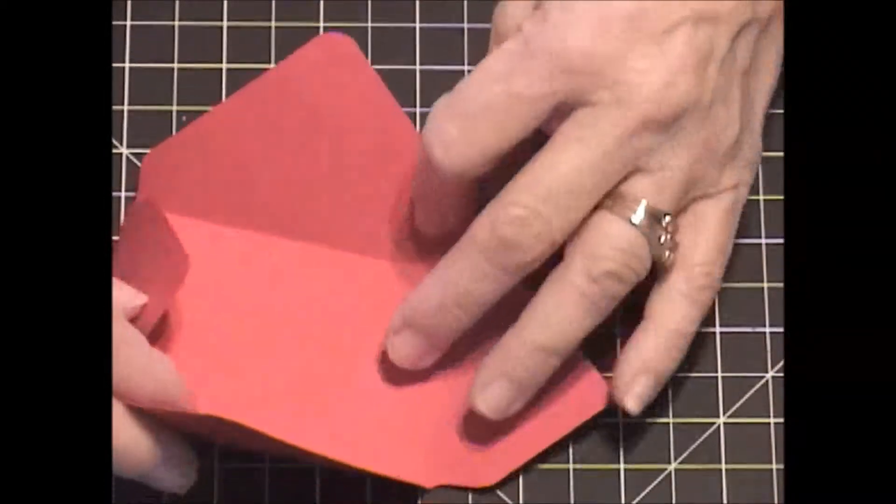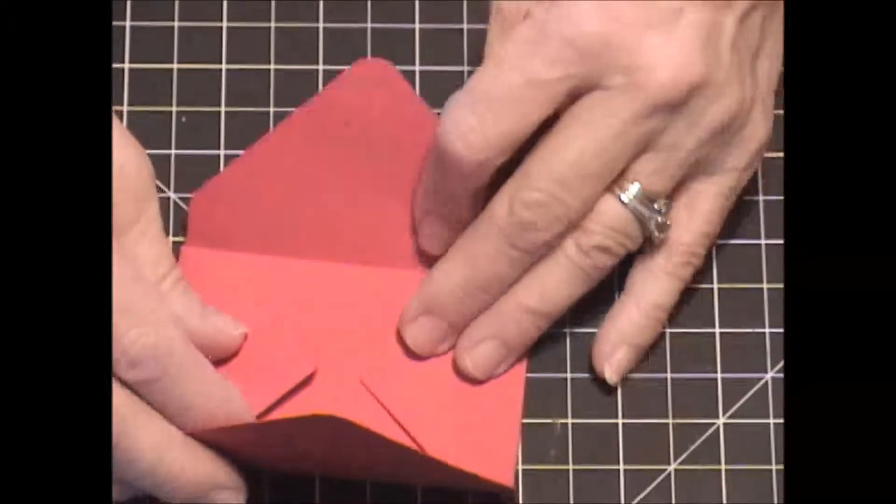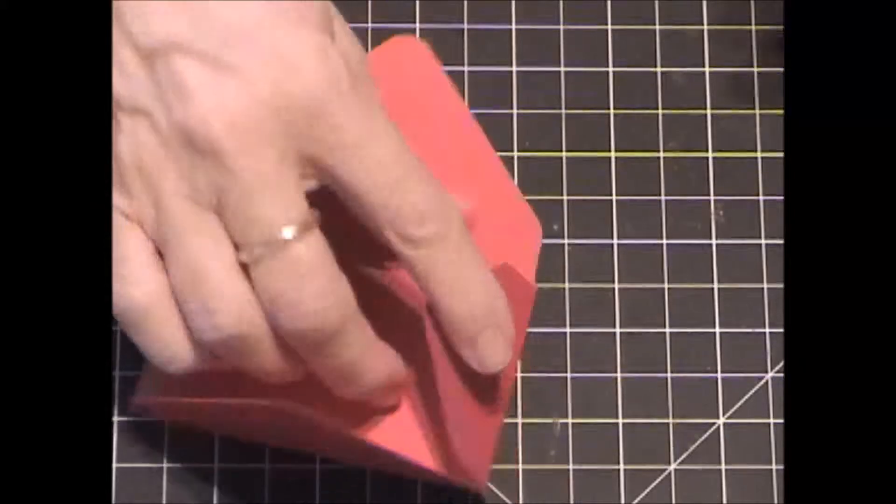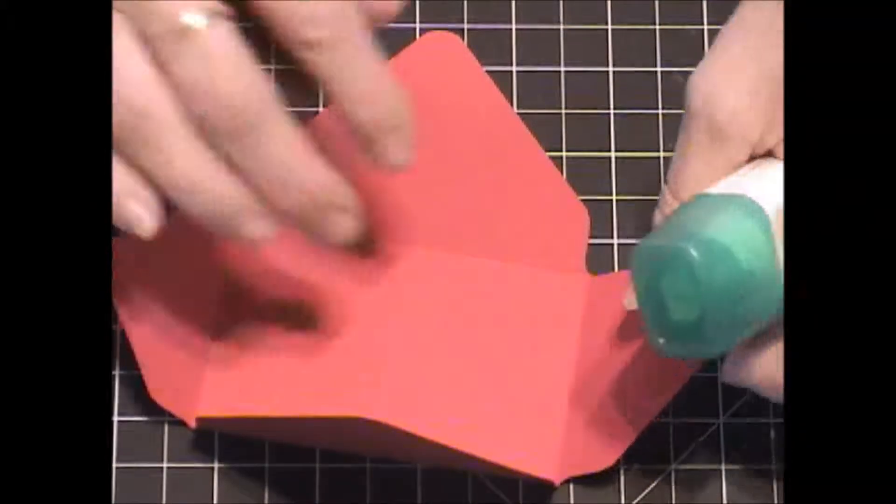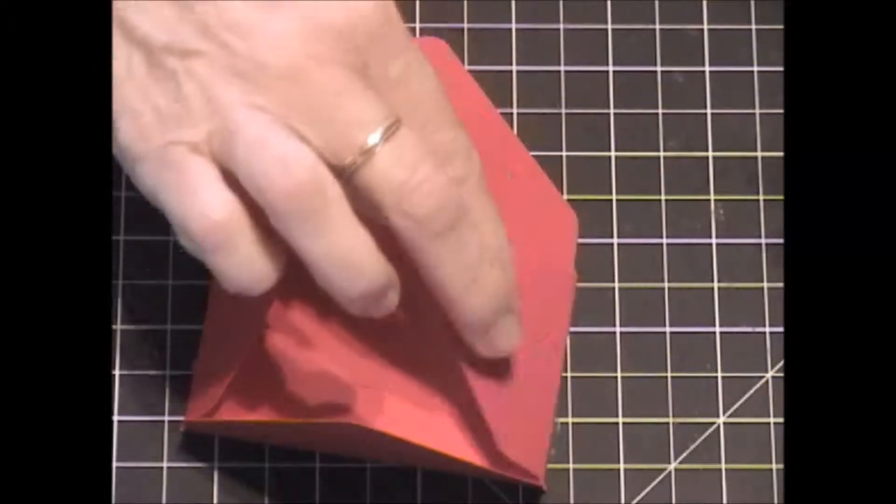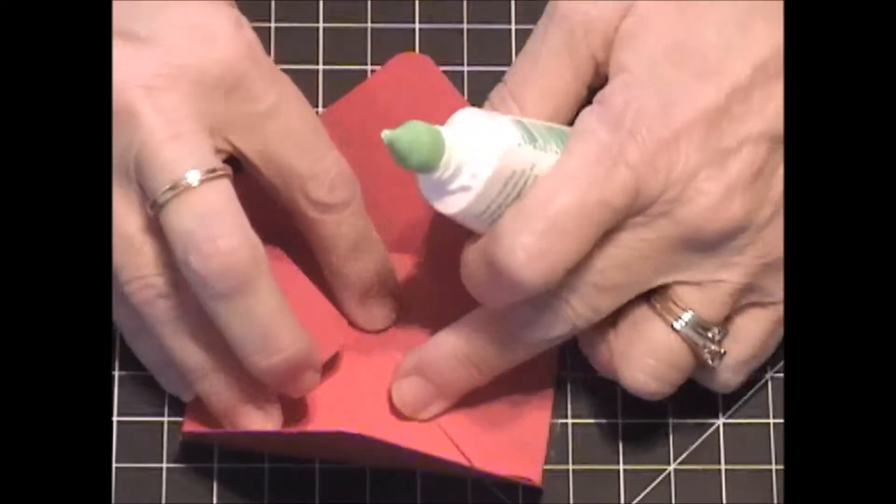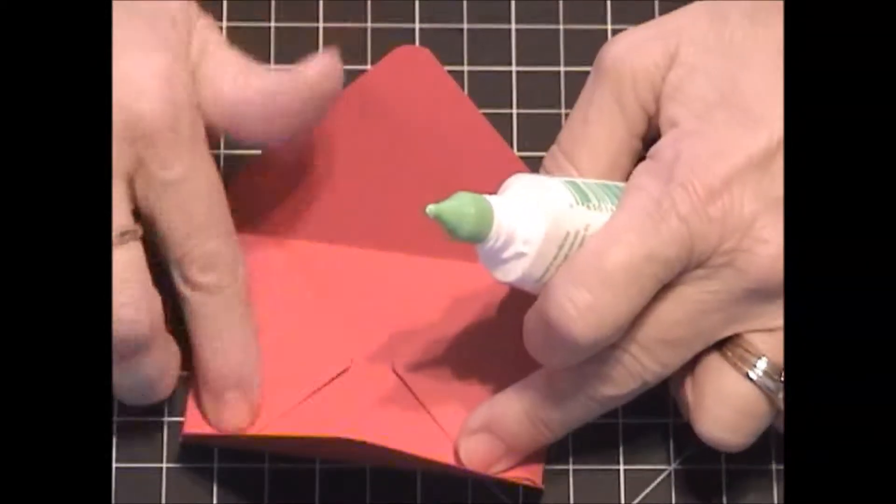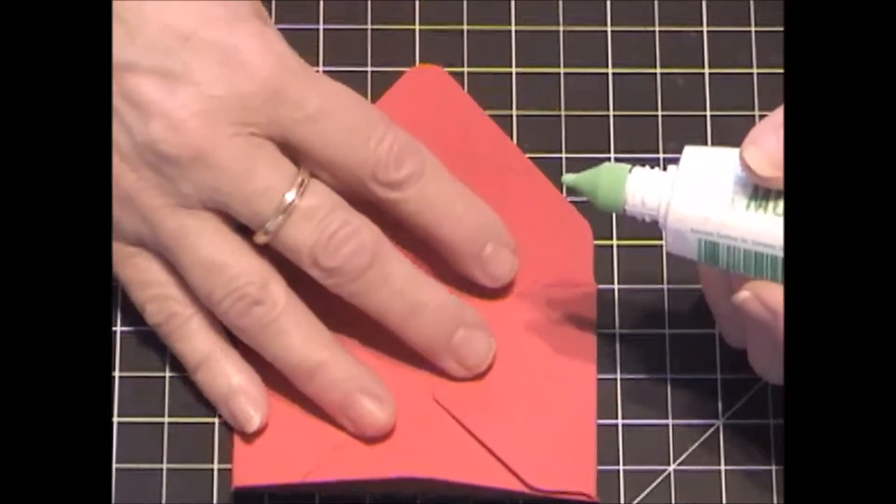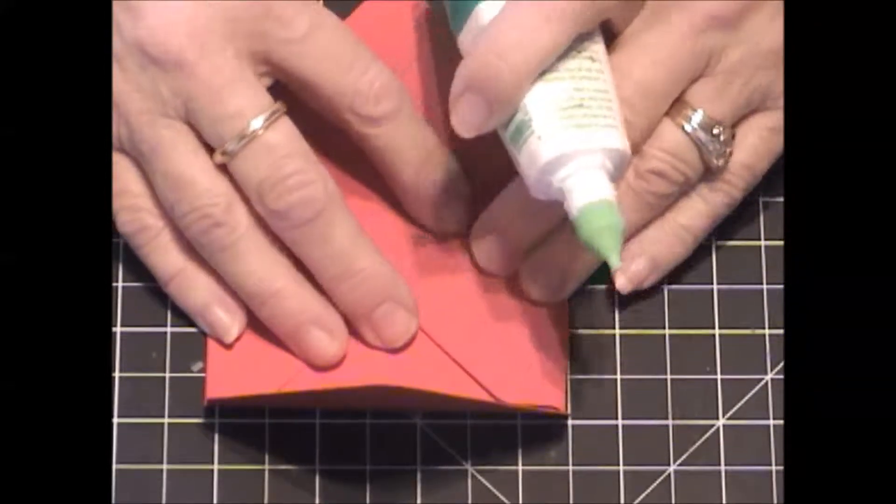We're going to do some with a belly band today. So now we're going to put some adhesive on here. We don't want it up here at all. We're just going to do it on the bottom parts, and I'm using Tombow. I would recommend a strong adhesive so it doesn't give away.